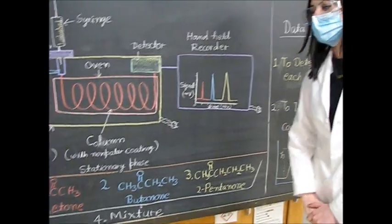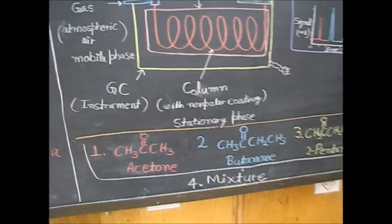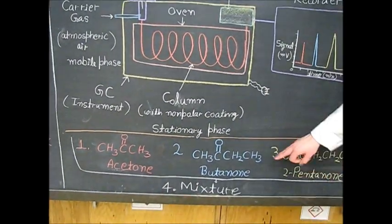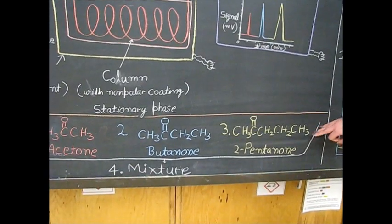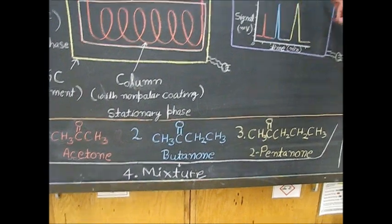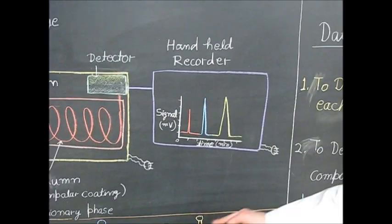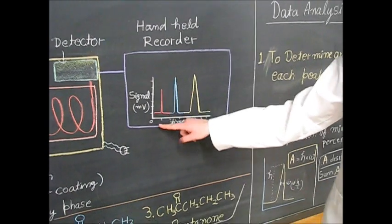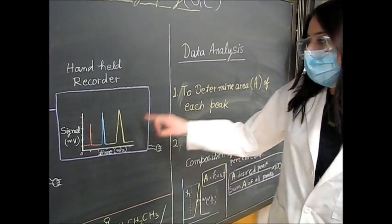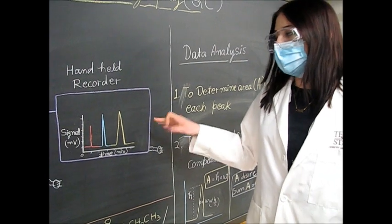In our lab we are going to run a GC for four different things. First we will run it for acetone, then butanone, then pentanone, and then the last thing we will do is a mixture. If you look at the graph we have here of the mixture, you can see acetone was first, then butanone and pentanone, and we can use this for our data analysis.